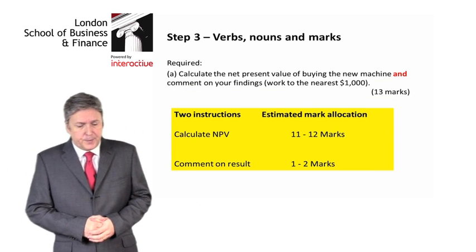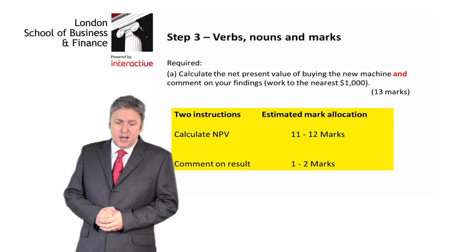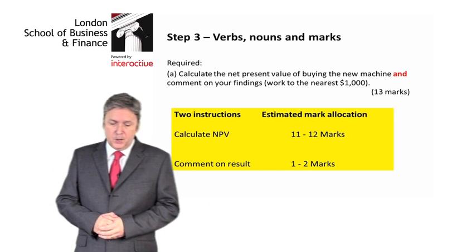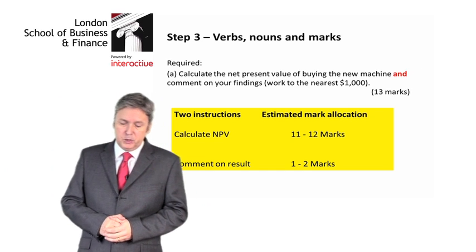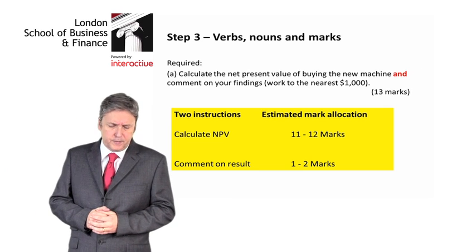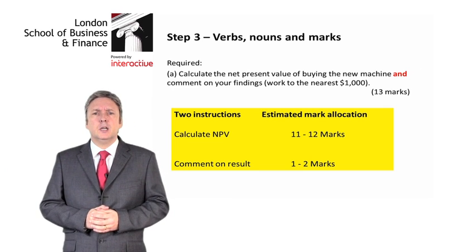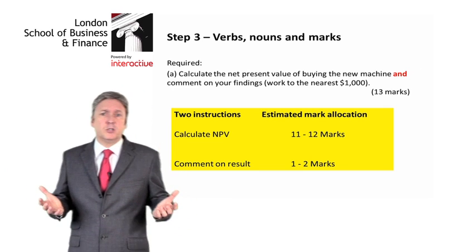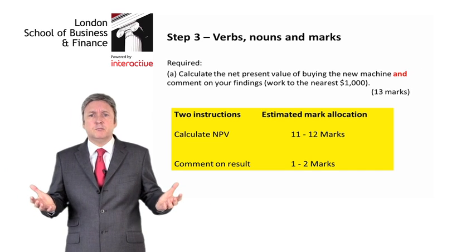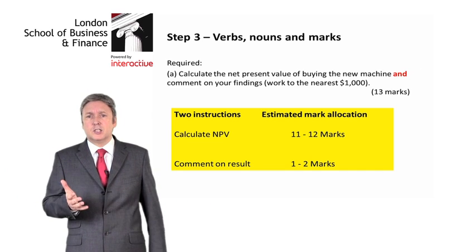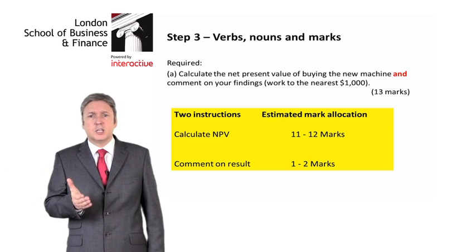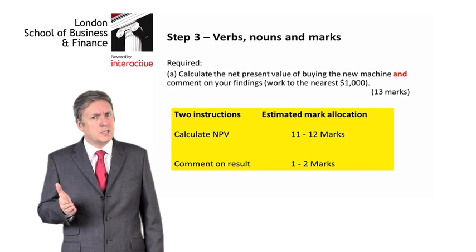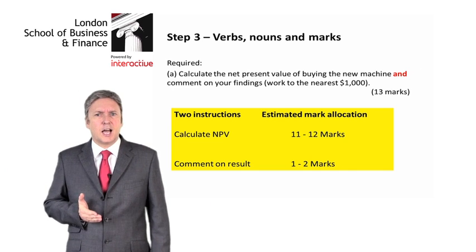If we look at part A: 'calculate the net present value of buying the new machine and comment on your findings.' Very simple — it's a computation. With a computation, you either know how to do it or not. It's a basic NPV computation, so you better know this in the exam.